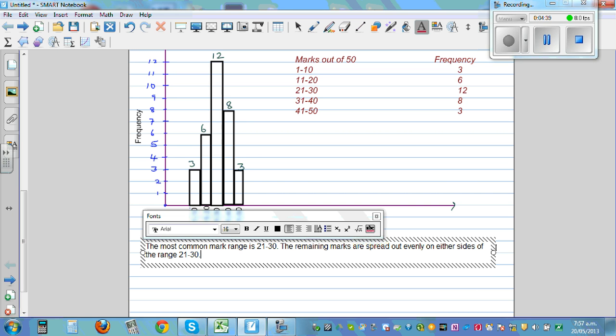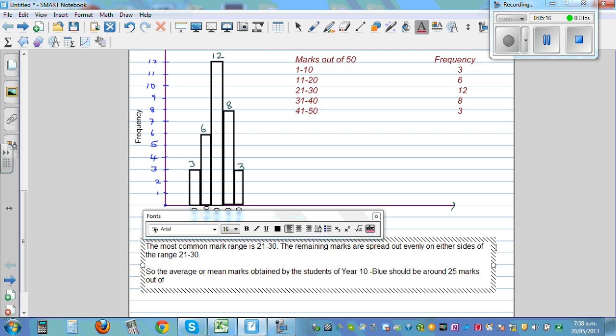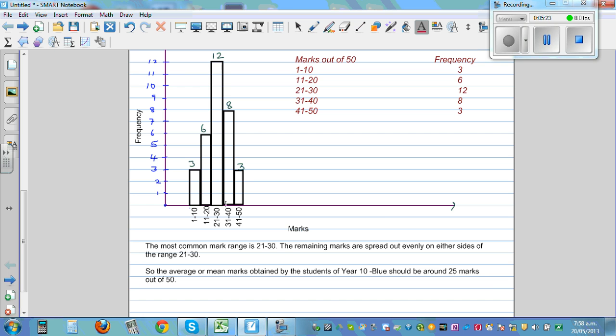So from this you can see, the average or mean marks obtained by the students of Year 10 Blue should be around 25 marks out of 50. So you can make an estimate. The histogram tells us as most of the students are between 21 to 30, and as there is almost evenly spread on both the sides.